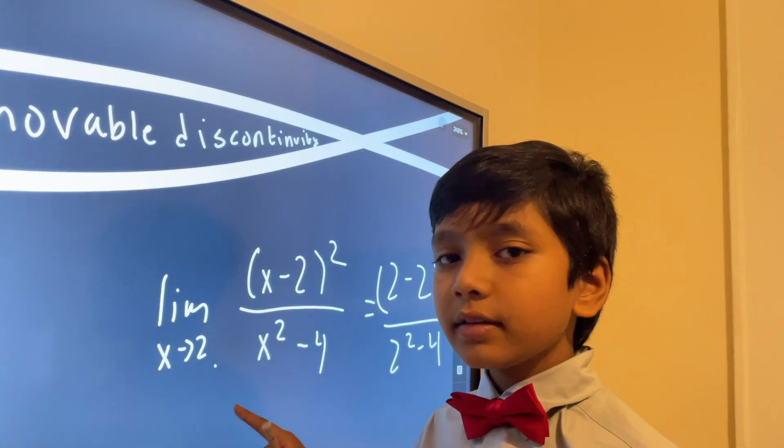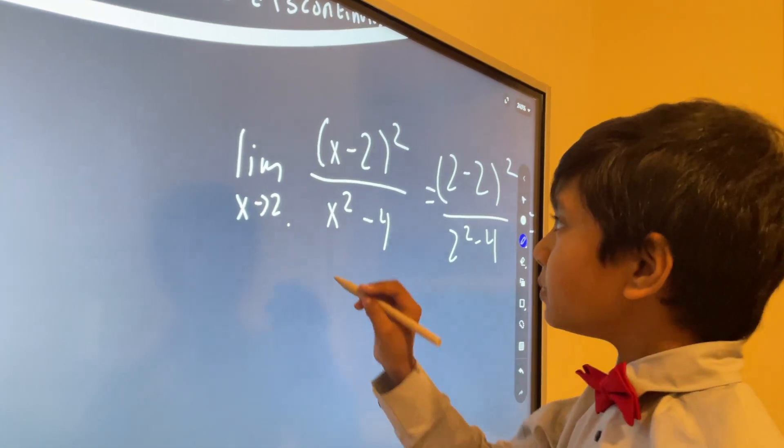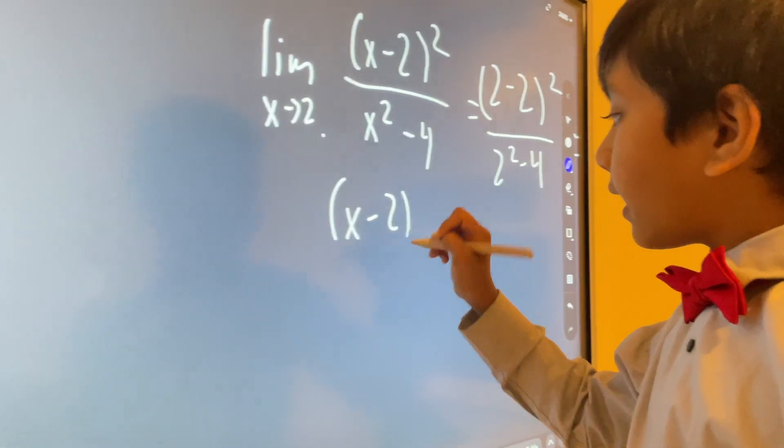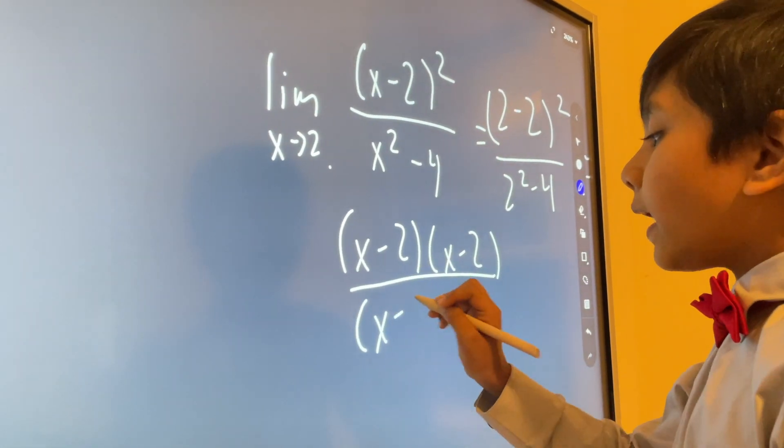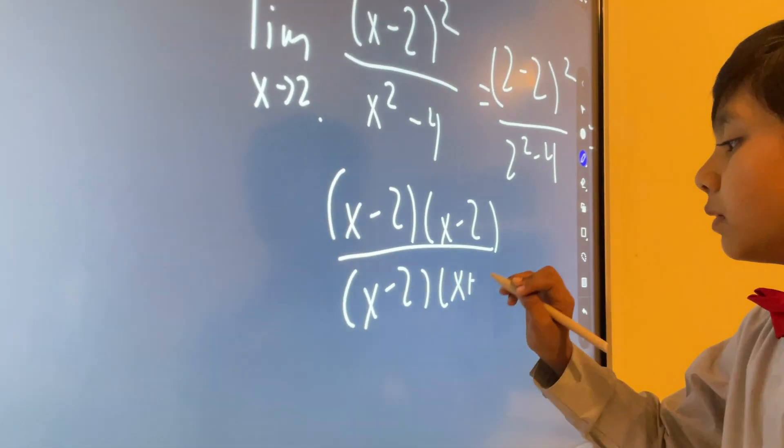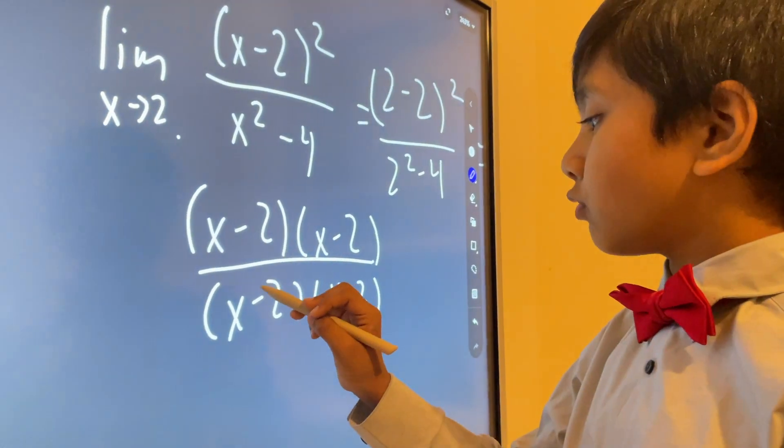But then, if we simplify this, taking (x-2)(x-2) over (x-2)(x+2), by factoring the difference of squares.